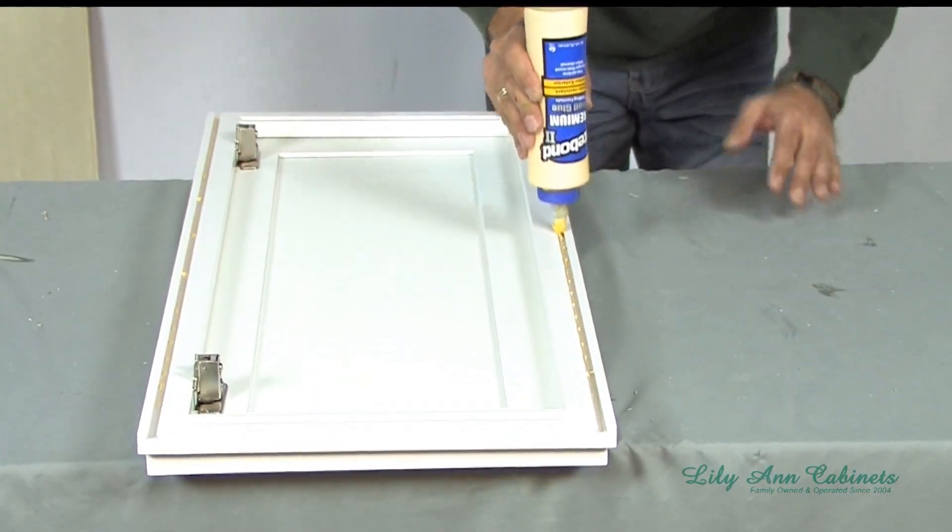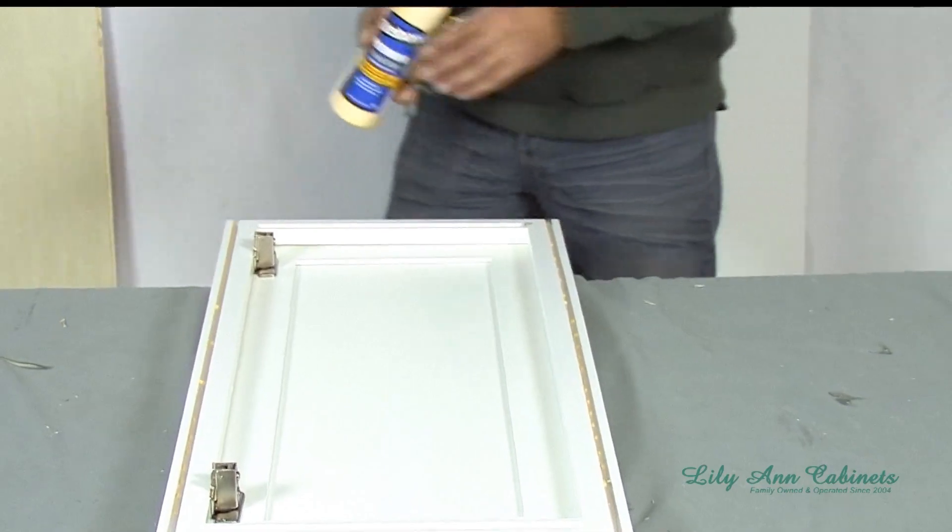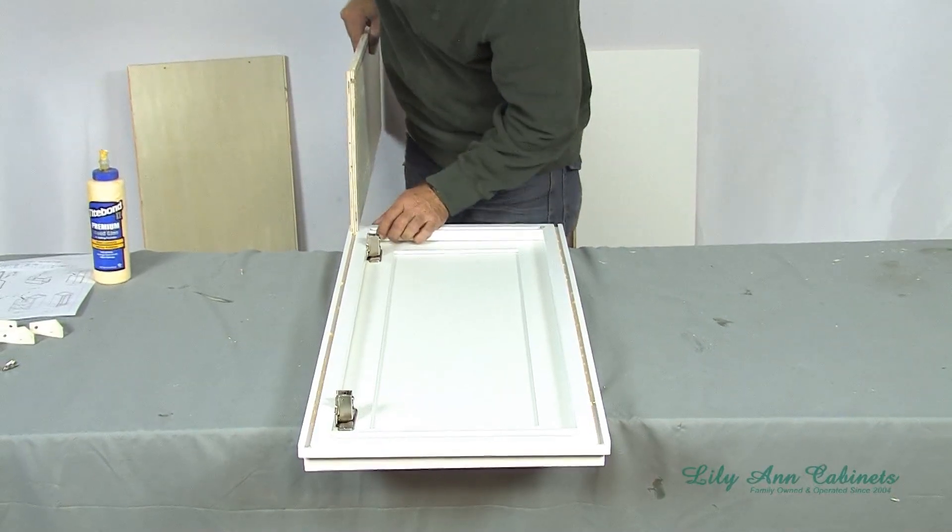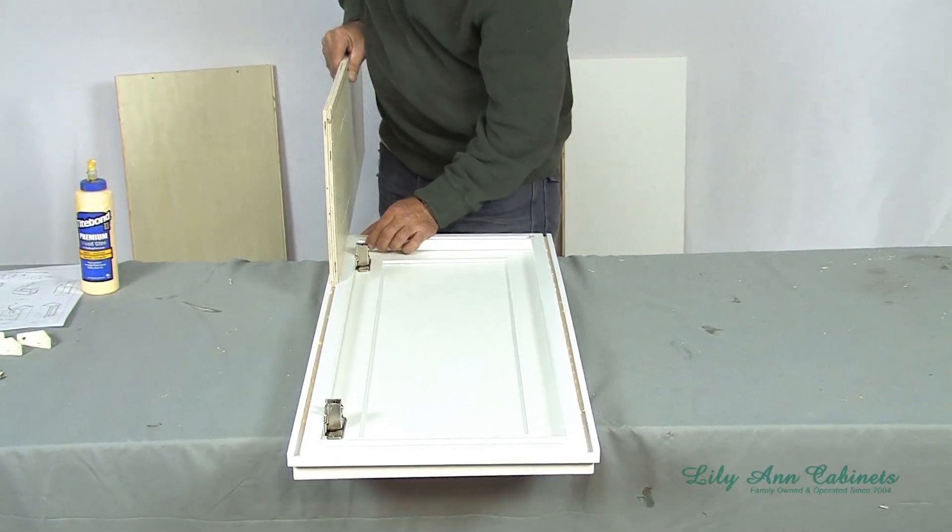Apply wood glue to the face frame grooves. You will want to use wood glue for as many places as you can. Then slide the sides into place.